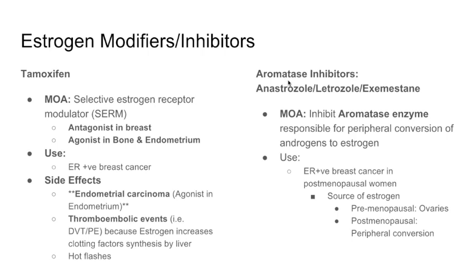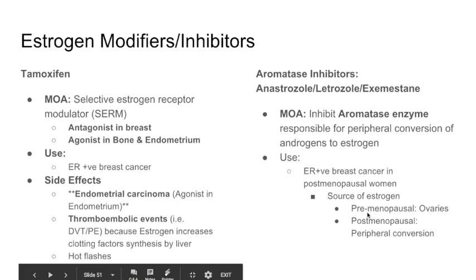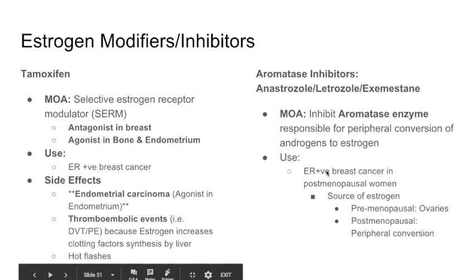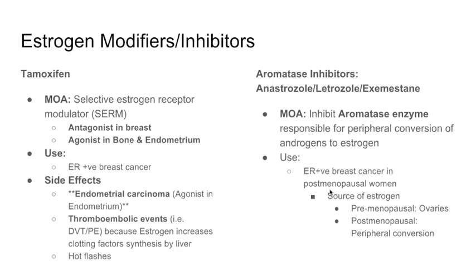The aromatase inhibitors — anastrozole, letrozole, and exemestane — inhibit the aromatase enzyme, which is responsible for the peripheral conversion of androgens to estrogen. These drugs are used for ER-positive breast cancer in postmenopausal women specifically, because premenopausal women get estrogen primarily from the ovaries, while postmenopausal women get estrogen from peripheral conversion by aromatase.